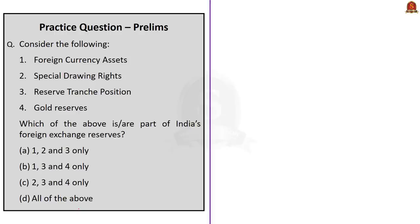This question is about India's forex reserves. It asks which of the following are part of India's foreign exchange reserves: foreign currency assets, special drawing rights, reserve tranche position, and gold reserves. All four are part of India's foreign exchange reserves. So the correct answer is option D, all of the above.